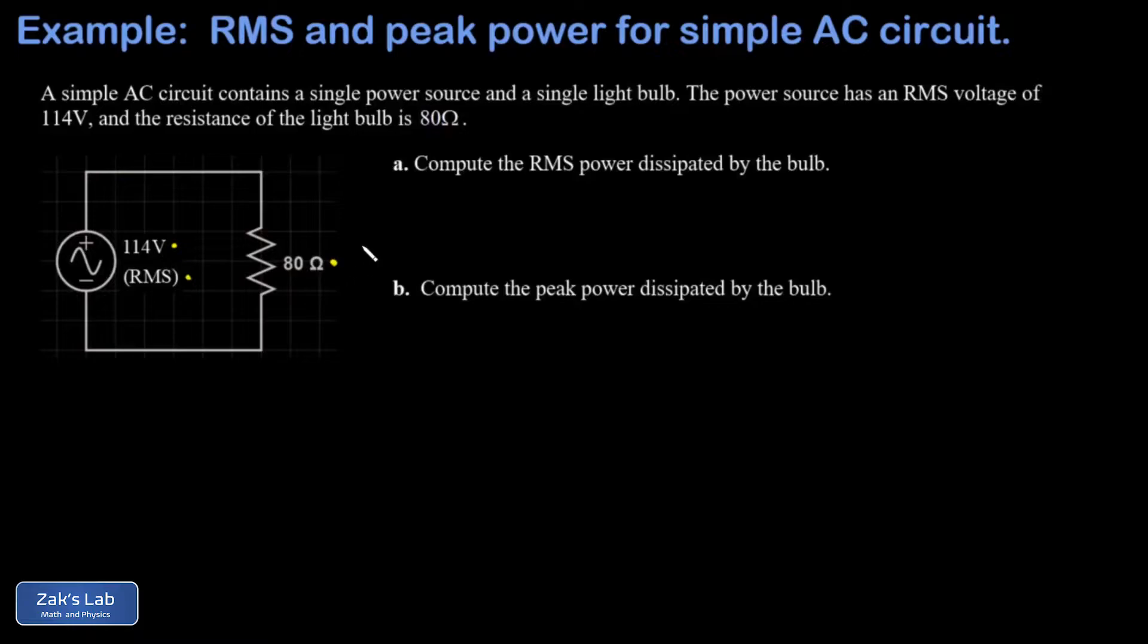We're trying to look at the power dissipated by this circuit. We're looking at the RMS power, again that's the type of averaging that we use for AC circuits, and comparing that to the peak power dissipated by this light bulb.